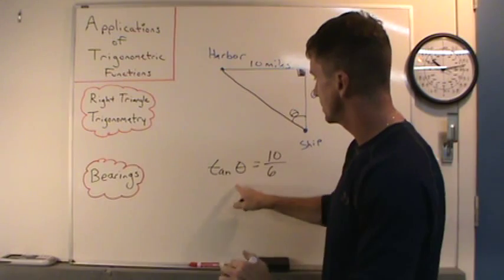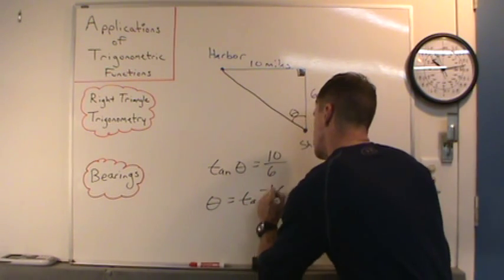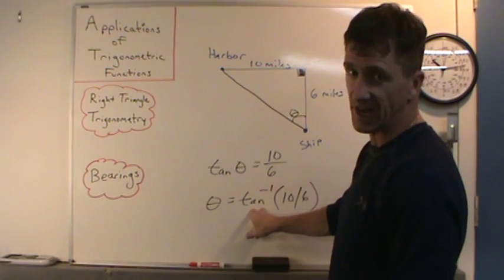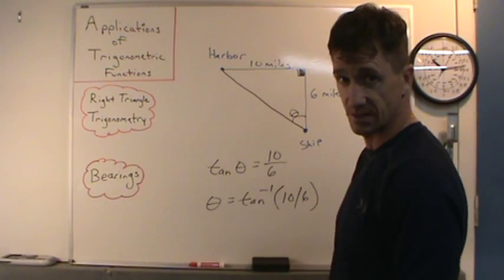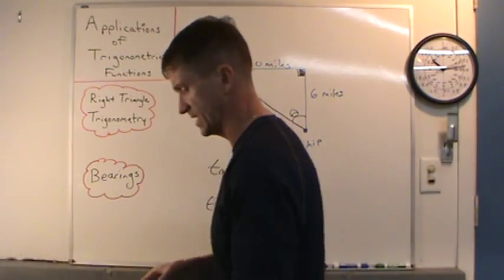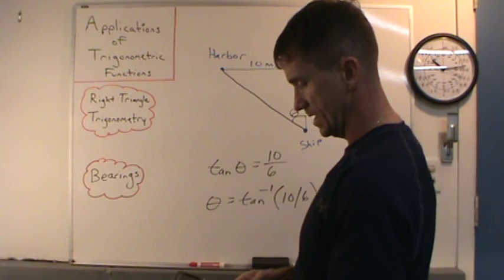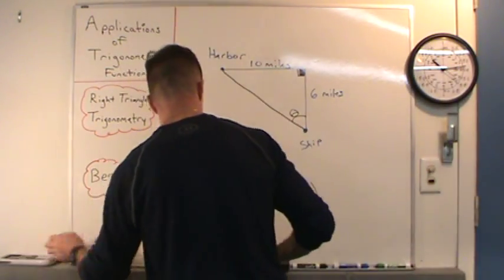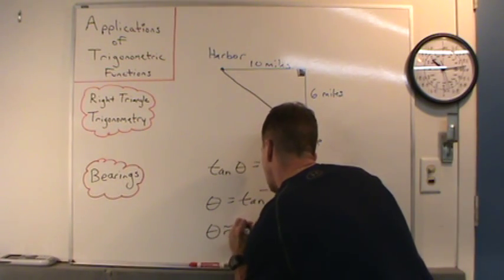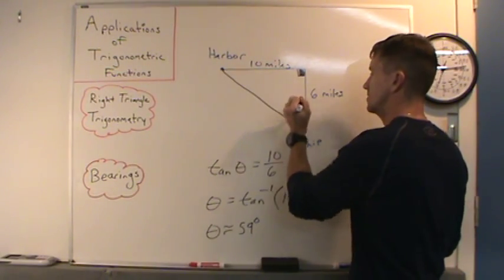Now, remember to find this on a calculator, we're looking for an angle. Theta equals inverse tangent of 10 divided by 6. You can also read this as the angle whose tangent ratio is 10 over 6 — an acute angle whose tangent ratio is 10 over 6. Hit second tan on the TI-83 or 84, enter 10 divided by 6, and that angle is about 59 degrees.